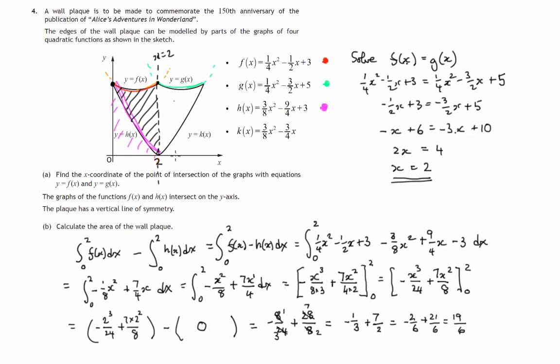So the required area, remember we said it was double that, so the required area equals twice 19 over 6, which is 19 over 3. So that's 6 and 1 third units squared.